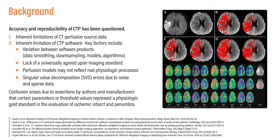In the last several years, the accuracy and reproducibility of CT perfusion has been questioned, due to several factors. The first is inherent limitations of the CT perfusion source data itself — noisy data in equals inaccurate results out. However, there are also inherent limitations in the CTP software itself: variation between software products, lack of a universally agreed upon imaging standard, perfusion models that may not reflect true physiologic processes, and single value decomposition errors due to noise. Additionally, confusion arises from assertions by authors and manufacturers that certain parameters or threshold values represent a physiologic gold standard in the evaluation of ischemic infarct and penumbra. As you will see in this presentation, this is not necessarily true.